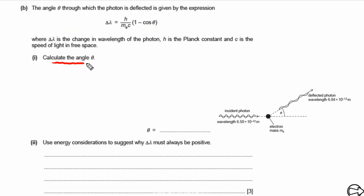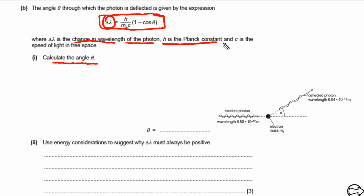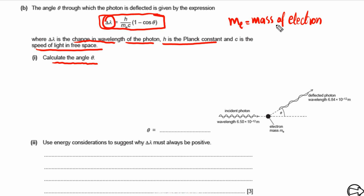For Part B, the question asks us to calculate the value of angle theta, and a formula is given. Everything in the formula is given to us — we simply need to plug in values. Delta lambda is the change in wavelength of the photon, h is Planck's constant, c is the speed of light in free space, and m_e is the mass of the electron, which can also be found in the data table.